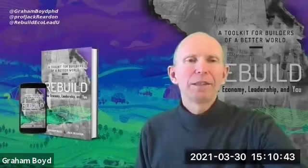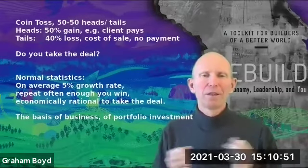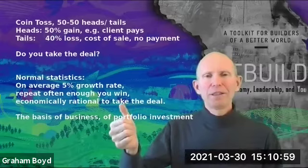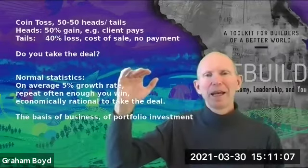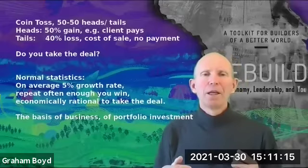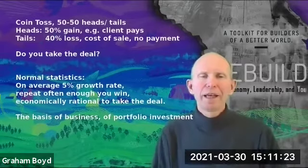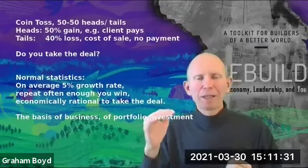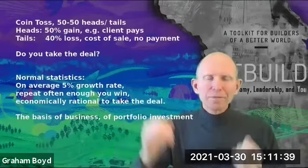So diving into what this means — if I were to offer you the following situation: I have a coin, I toss the coin. If it lands heads, the amount of money you have in your bank account grows by 50%. If it lands tails, the amount of money decreases by 40%. You can think of this as a bit like a business proposition — you are selling something to a client with a 50-50 probability that the client pays or doesn't pay. If they pay, your company bank balance grows by 50%; if not, it decreases by 40%, which was your cost of sale. Do you take the deal?